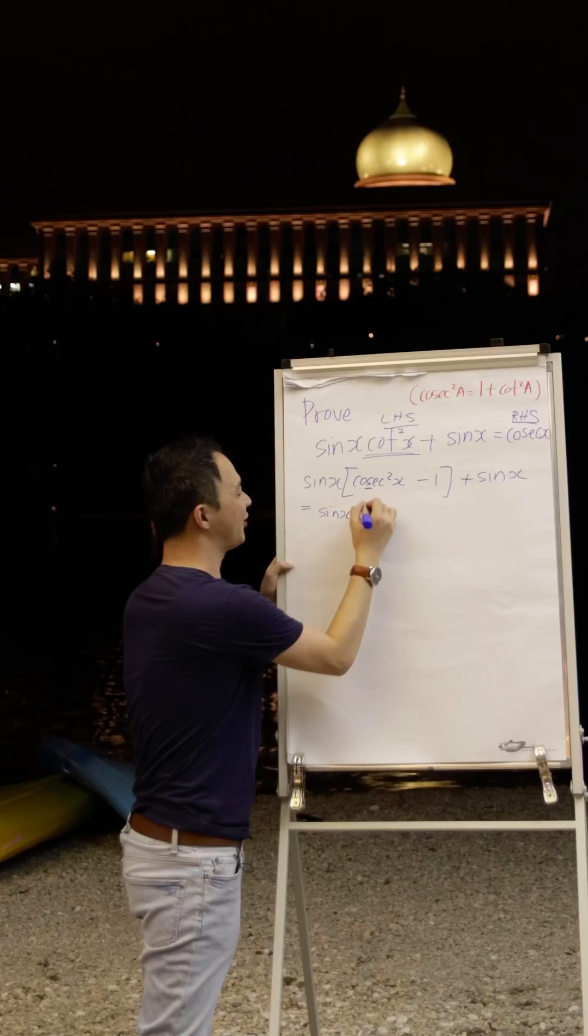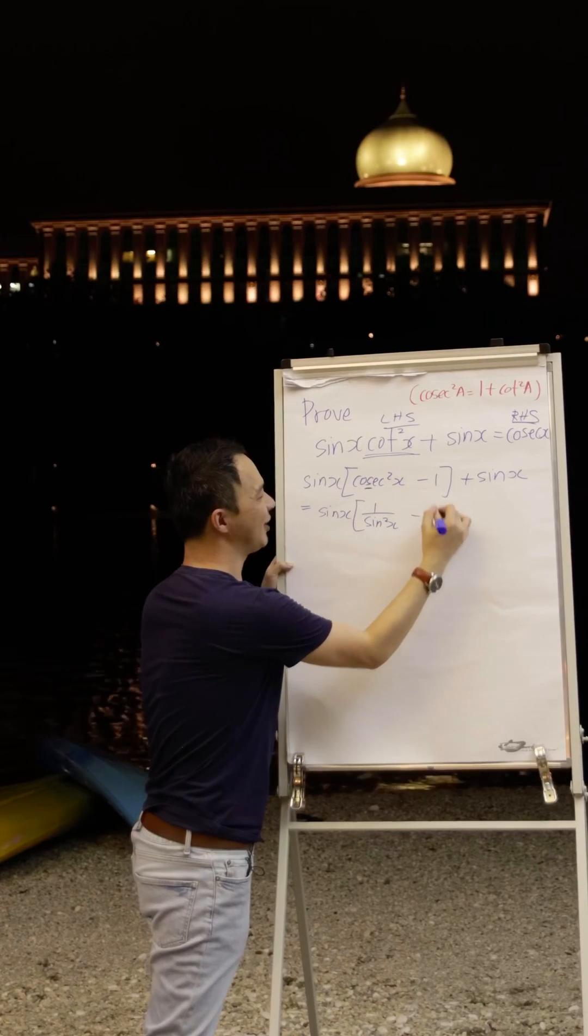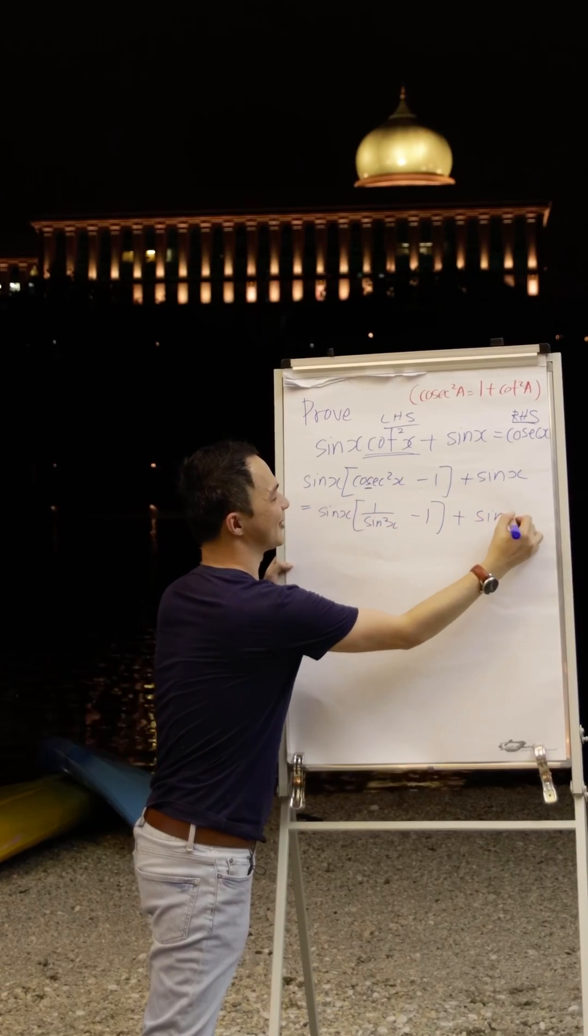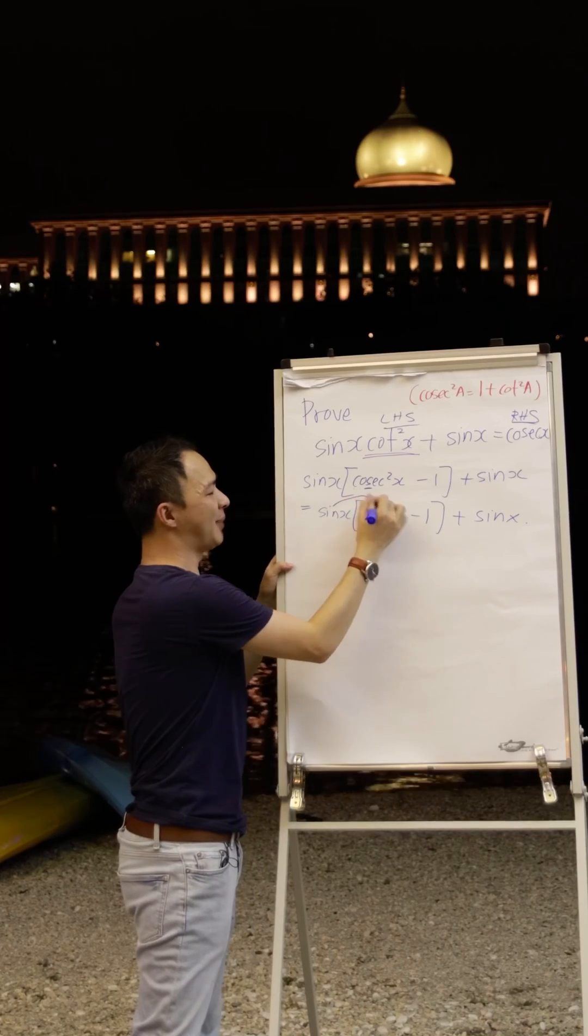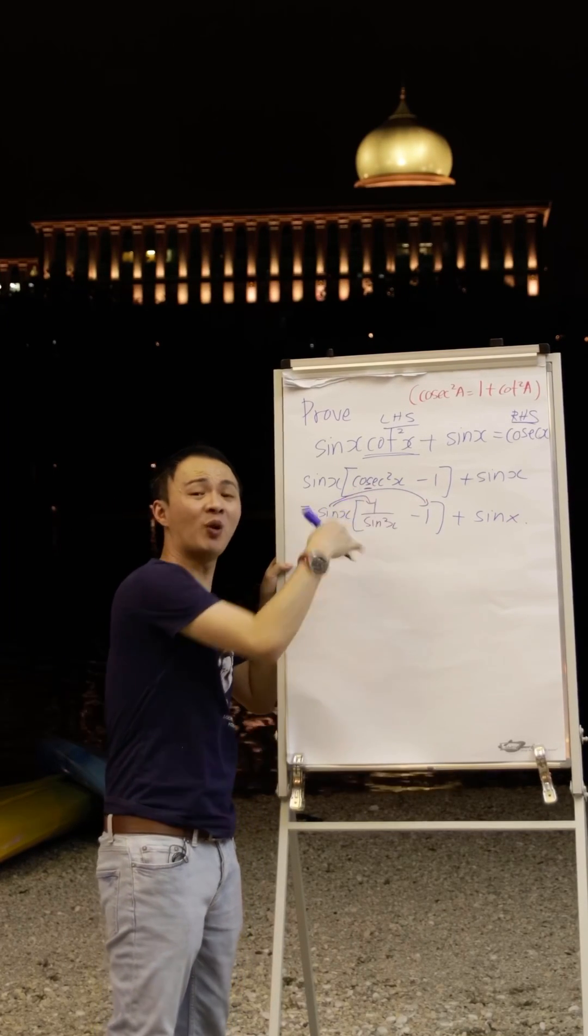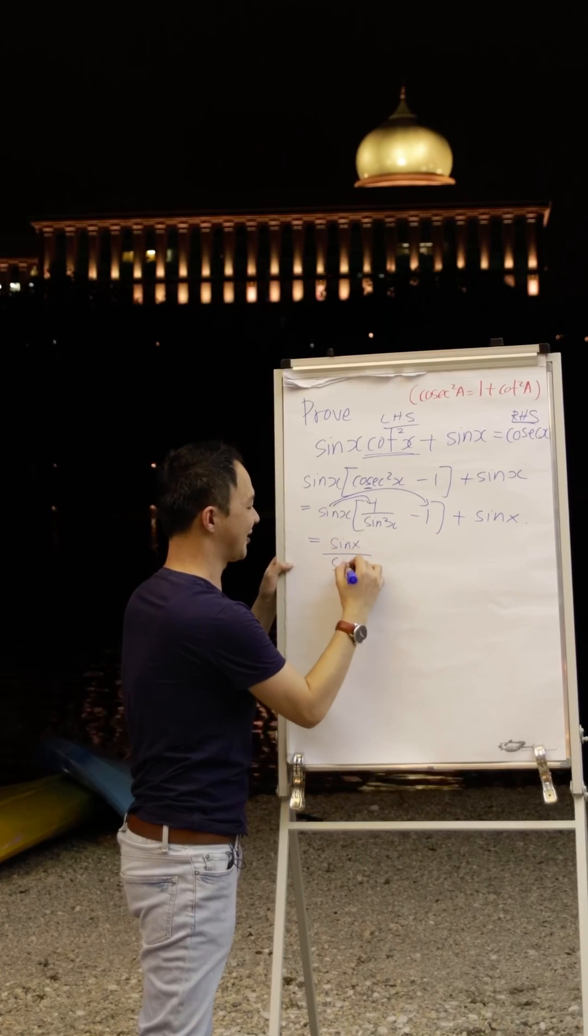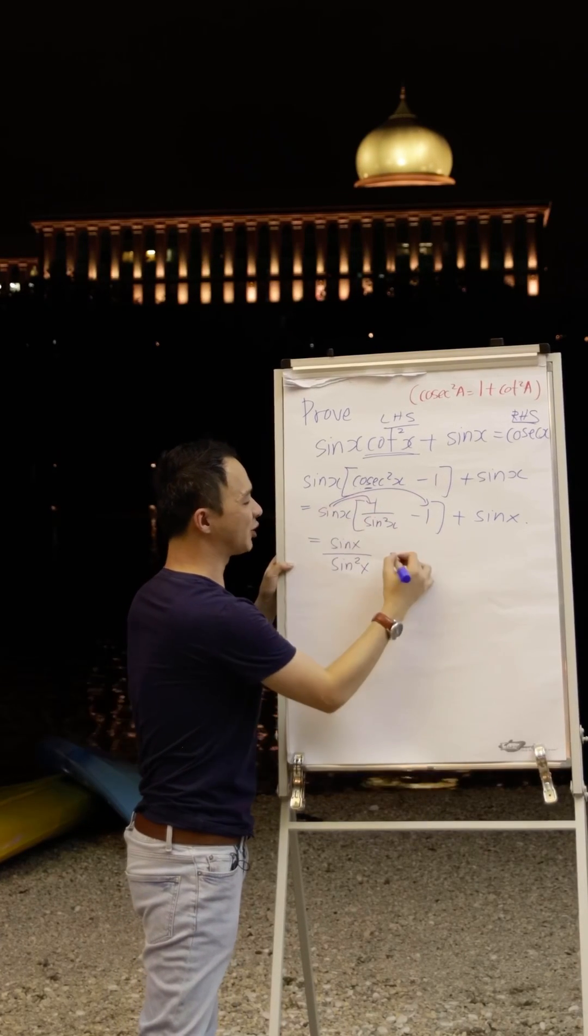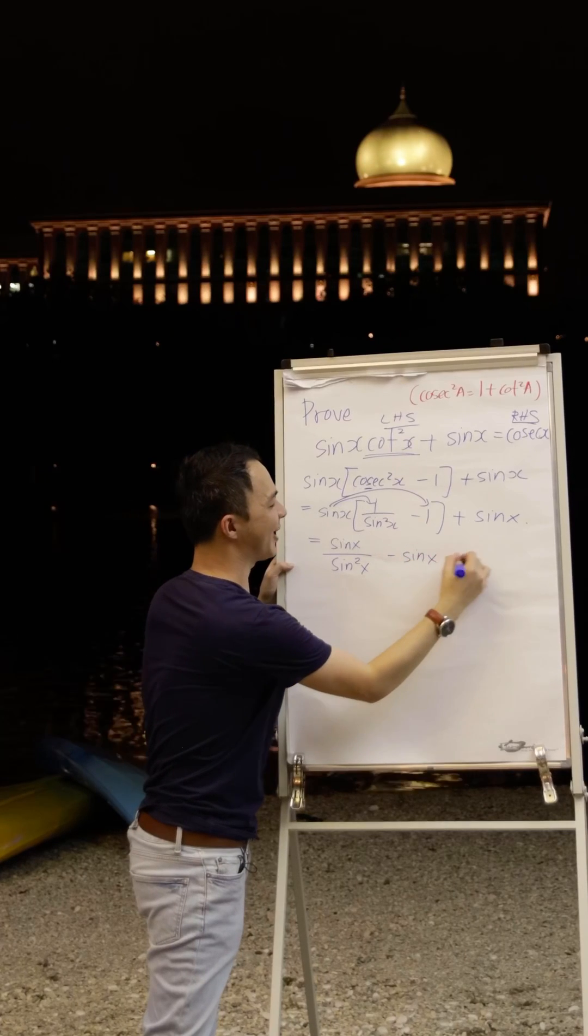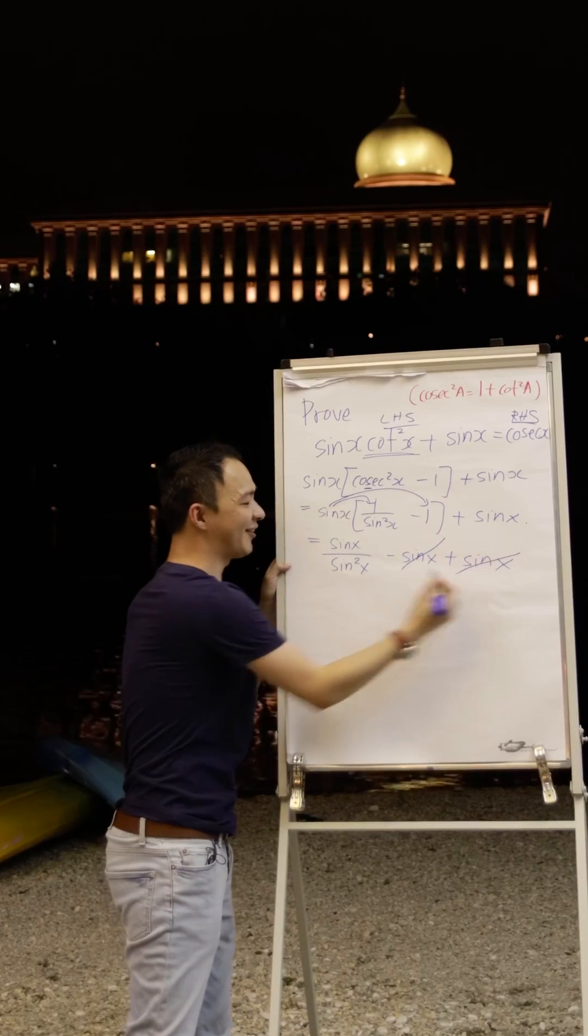So what I will do right now is, I will change this one into 1 over sine square x minus 1 plus sine x. Then what I need to do is just multiply sine x into both here. So sine x multiply 1 over sine square x, I will get sine x over sine square x. And then this one I multiply, I get minus sine x plus sine x. So you can see minus sine x plus sine x, I can cancel it out.